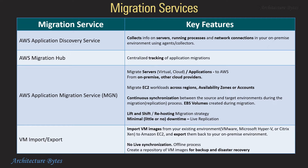AWS Migration Service helps migrate servers and applications to the AWS Cloud from your on-premise environment or from other cloud providers. You can also migrate EC2 workloads across regions, availability zones, or accounts. It ensures continuous synchronization between source and target environments during migration, creates EBS volumes during the process, and is a lift-and-shift migration strategy with little or no downtime.